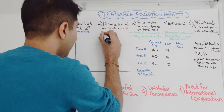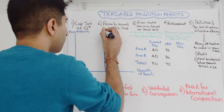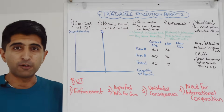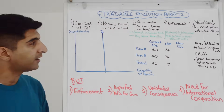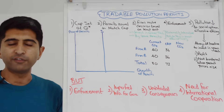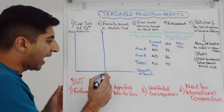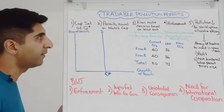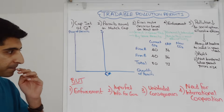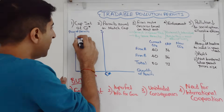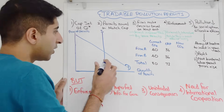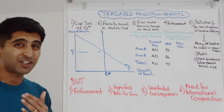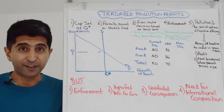The supply curve in this market is going to be vertical — perfectly price inelastic — because the amount of permits is fixed to match the cap. It can't rise or fall even if price changes, and that supply is going to be at the socially optimum level of Q*. The demand curve is normal and downward sloping, so where the two curves meet you have the price of permits, P1 — essentially the price of pollution.